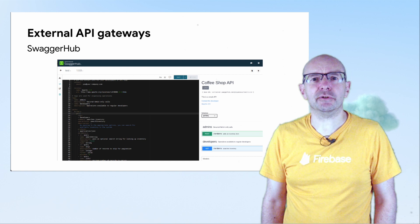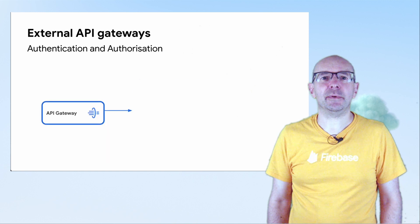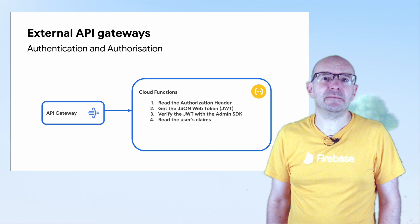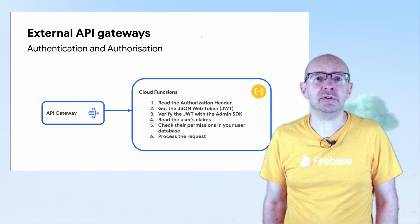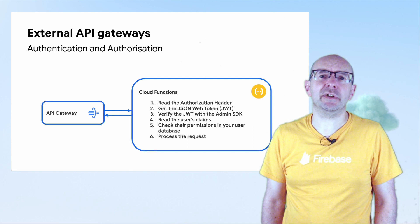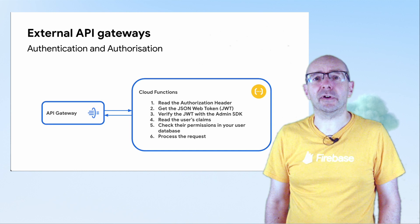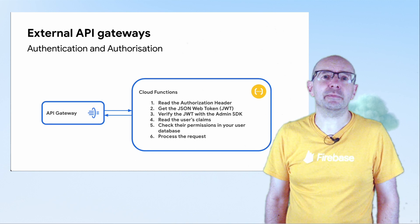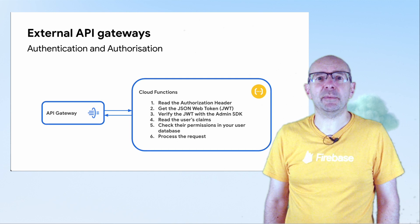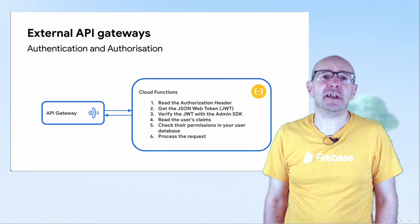When you create your own endpoints you will lose the authorization layer that you get with Firebase security rules. The first thing to do when you receive a request is to verify the authentication token with the Admin SDK, then check the authorization rules which you will need to create within your own code. Callable functions handle the authentication token automatically, but they only support POST methods. So if you're looking to implement GET, PUT, PATCH and DELETE you'll have to use a standard HTTPS function.